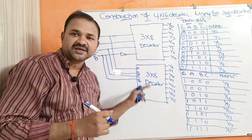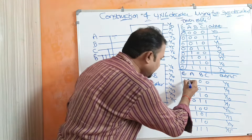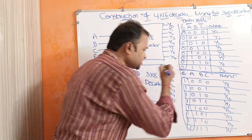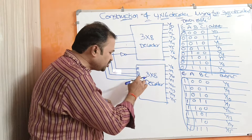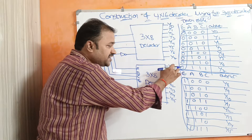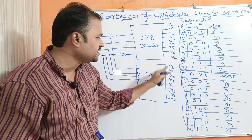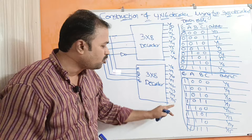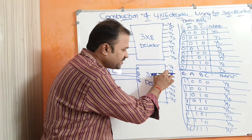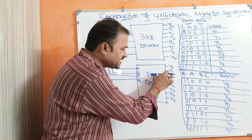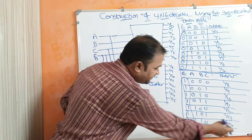For the second decoder, the enable input is passed directly — so enable is 1. With enable=1, this decoder is active for the next 8 combinations. If the inputs are 000, then the first output of this decoder, Y8, is active. For 001, Y9 is active. For 010, Y10 is active. Likewise, if the inputs are 111, then Y15 is active. So the second 3 by 8 decoder produces outputs Y8 through Y15.